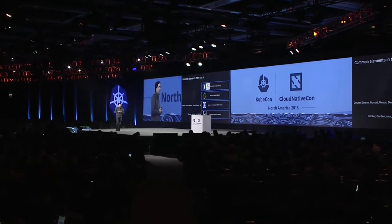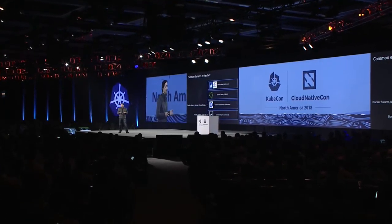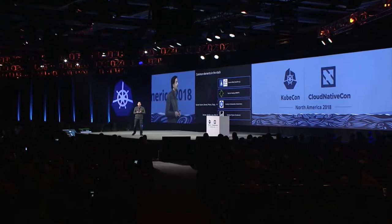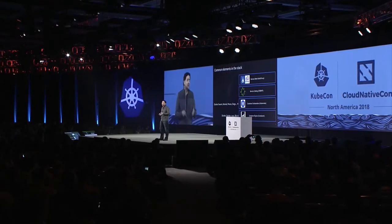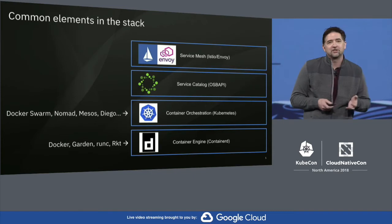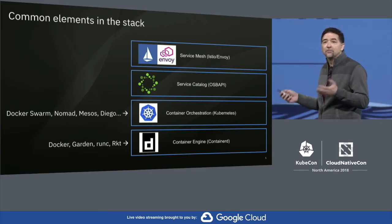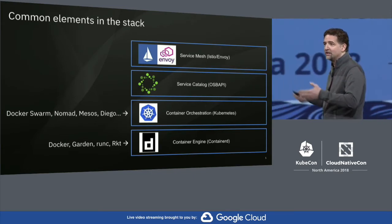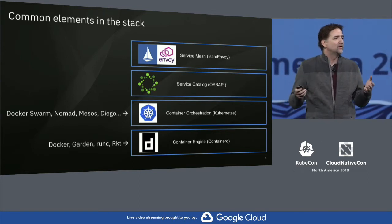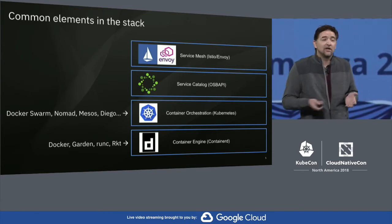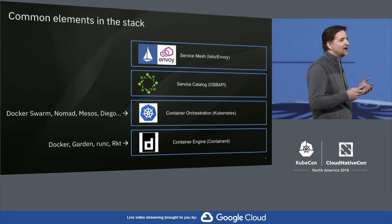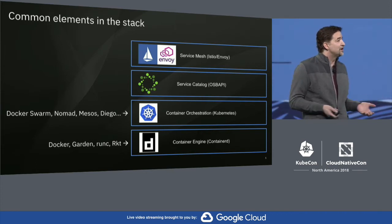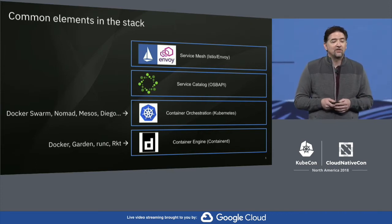As a community, over the last few years, we've made a lot of progress on joining forces and agreeing on some common elements in the cloud native stack. We've come together around the container engine with projects like containerd. We've come together around orchestration and created the incredible phenomenon of Kubernetes. And we've had new things like service brokers and service meshes where we've quickly aligned on their value and the projects we want to work on together.